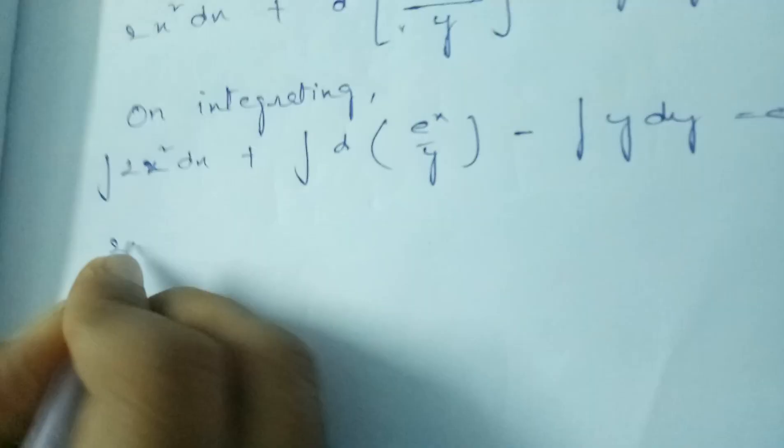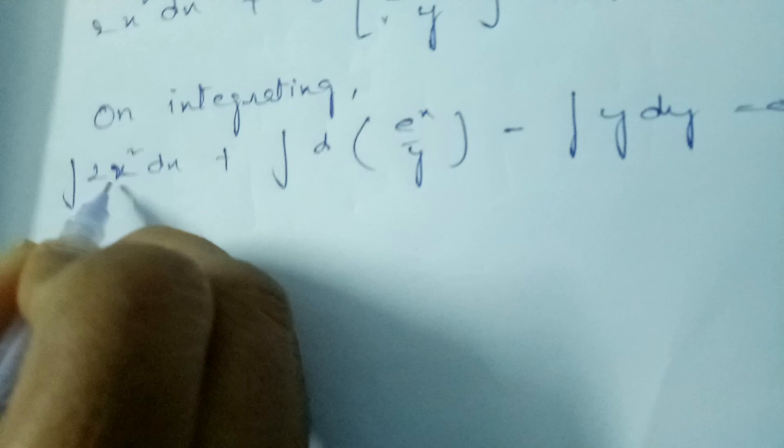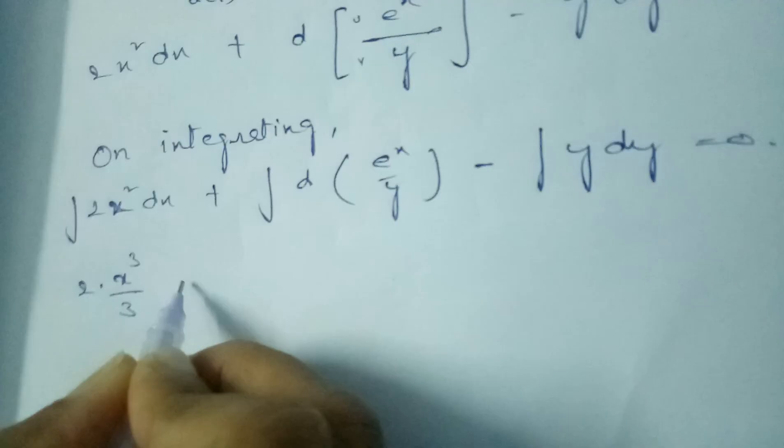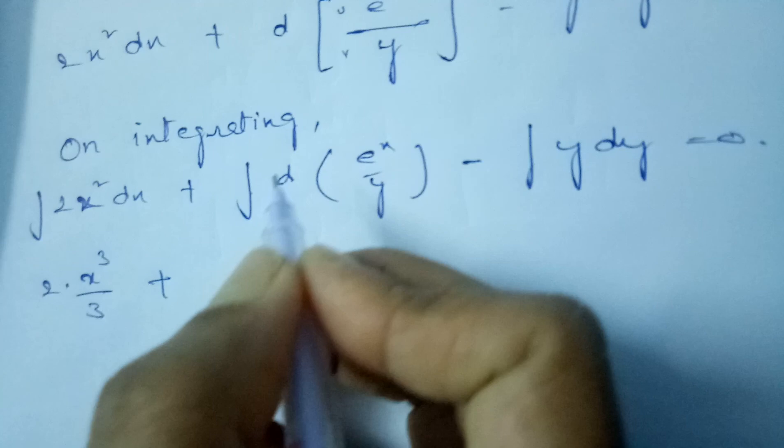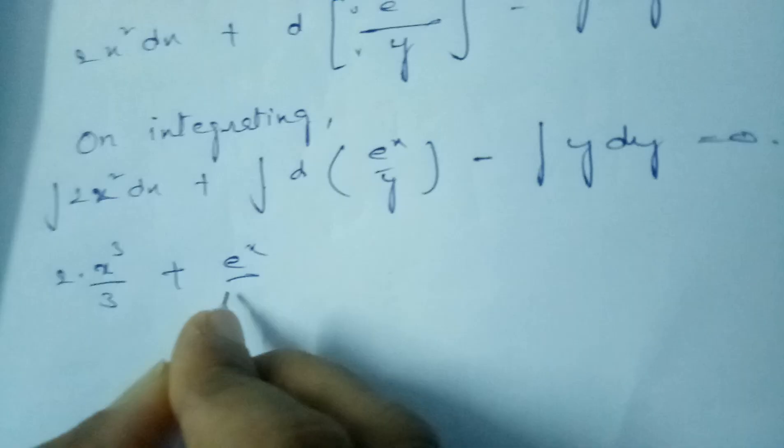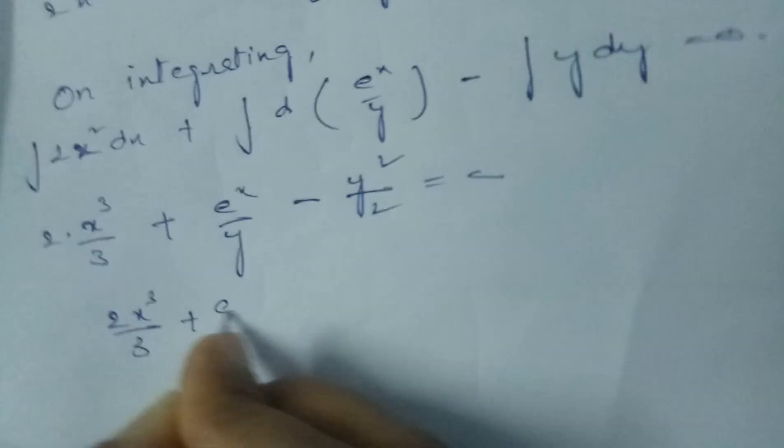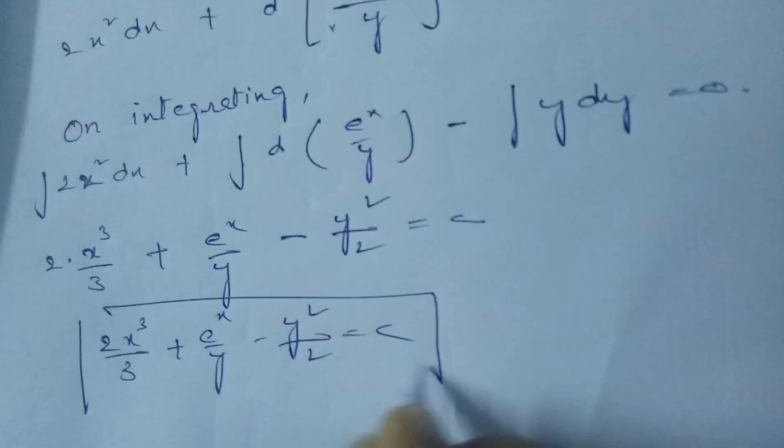Since differentiation and integration are reverse functions: the integral of 2x² dx = 2x³/3; the integral of d(e^x/y) = e^x/y; and the integral of y dy = y²/2. Therefore, the final answer is 2x³/3 + e^x/y minus y²/2 = c, which is the general solution for the given non-exact differential equation.